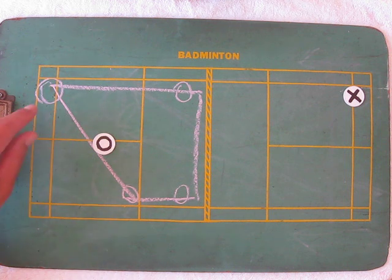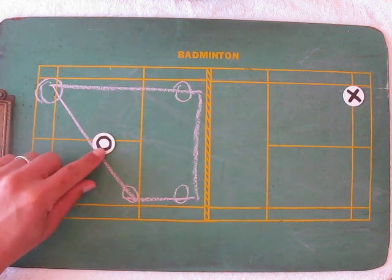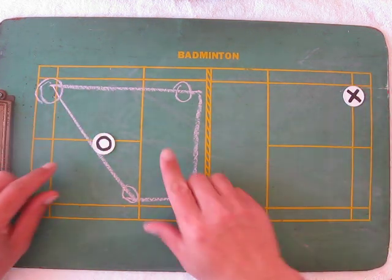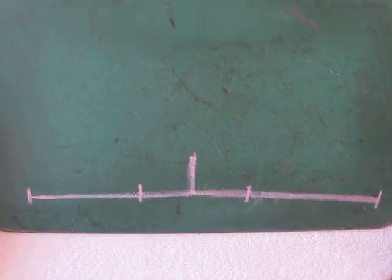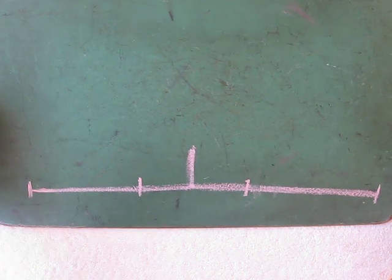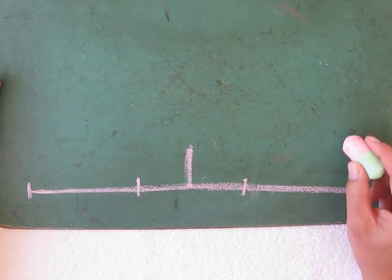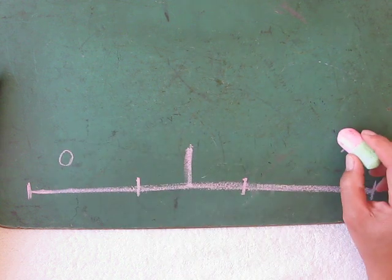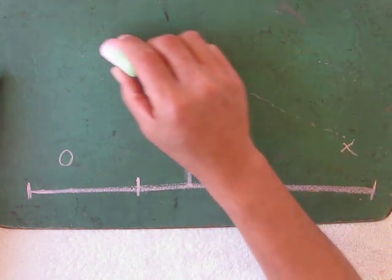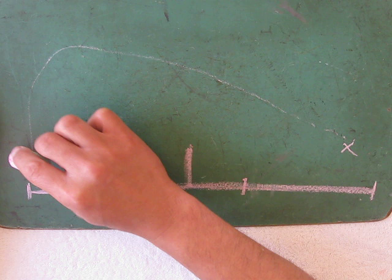Now when you hit this shot to the backcourt, what you want to do is you want to hit it over your opponent's head. So it looks like this. So this is you, you're X, and this is O.